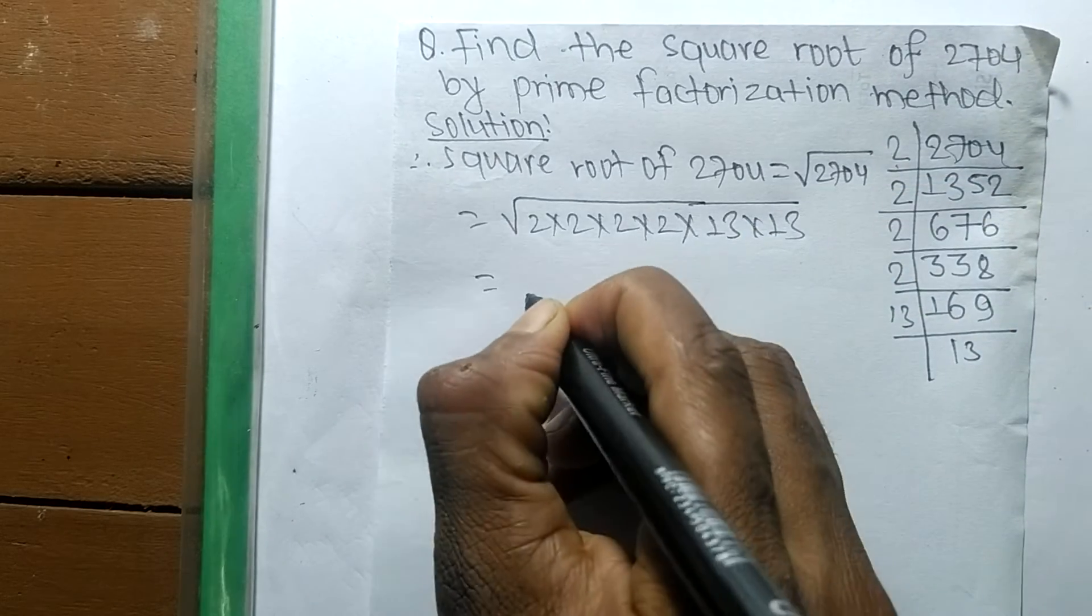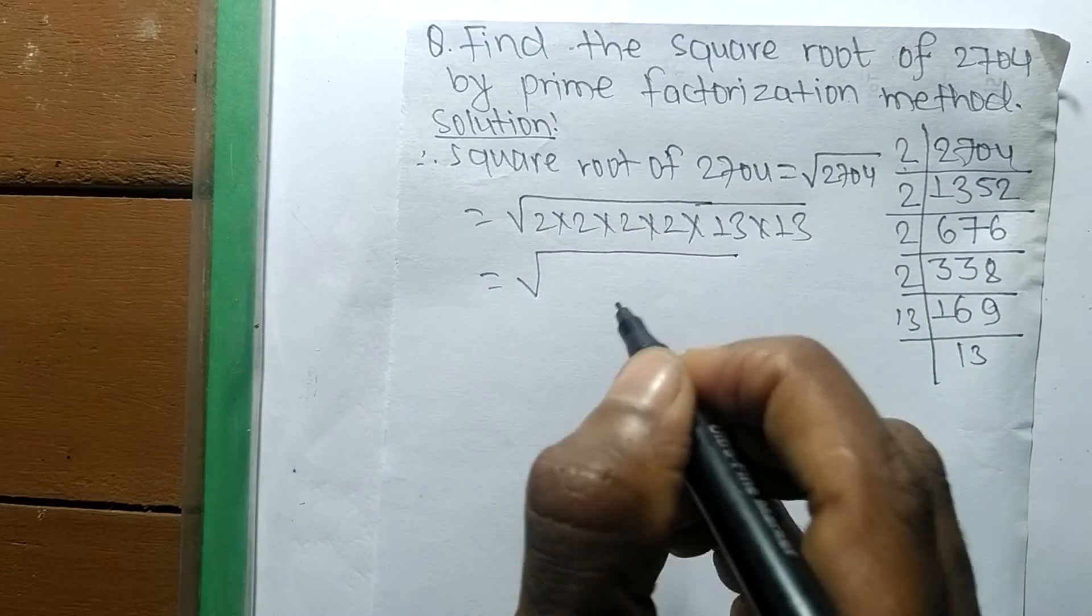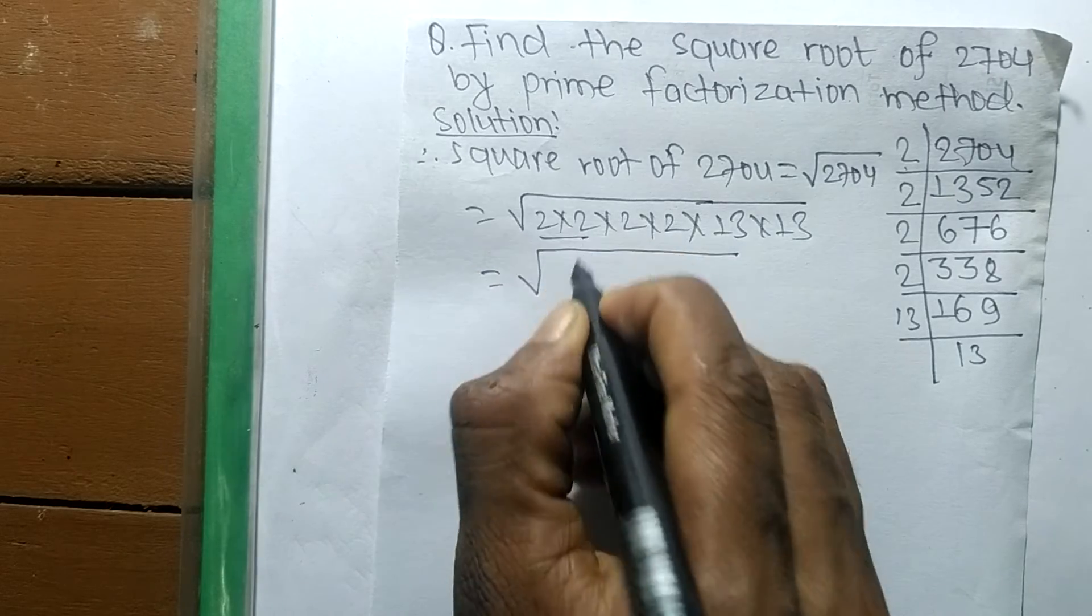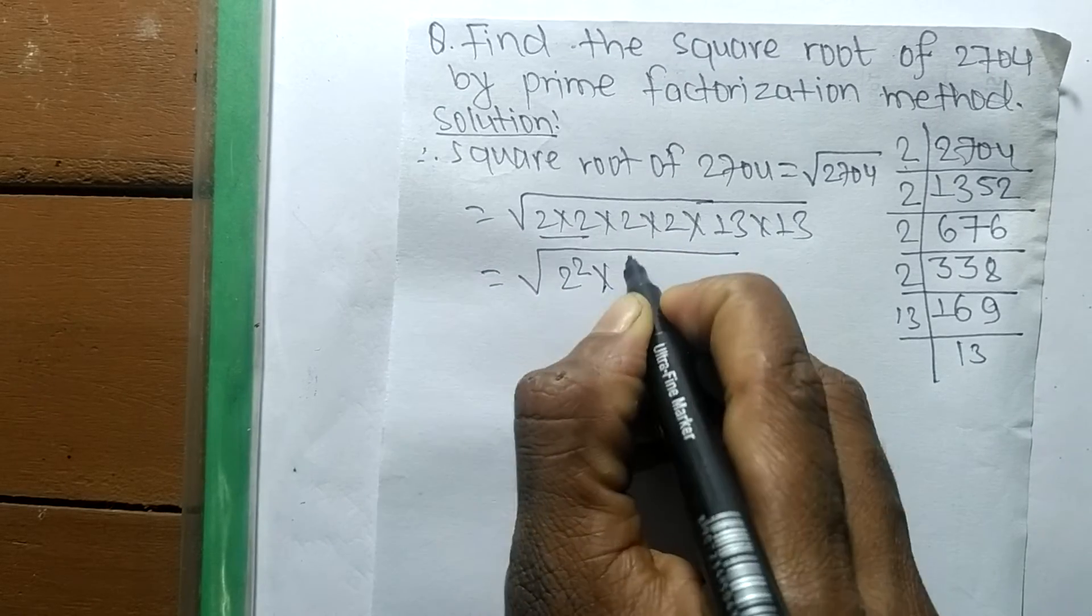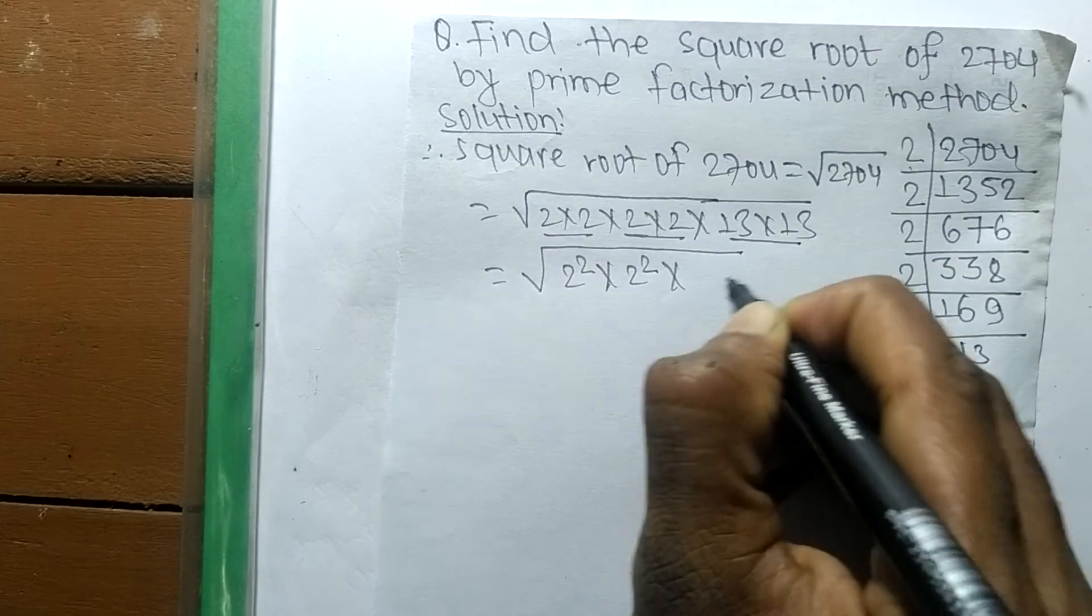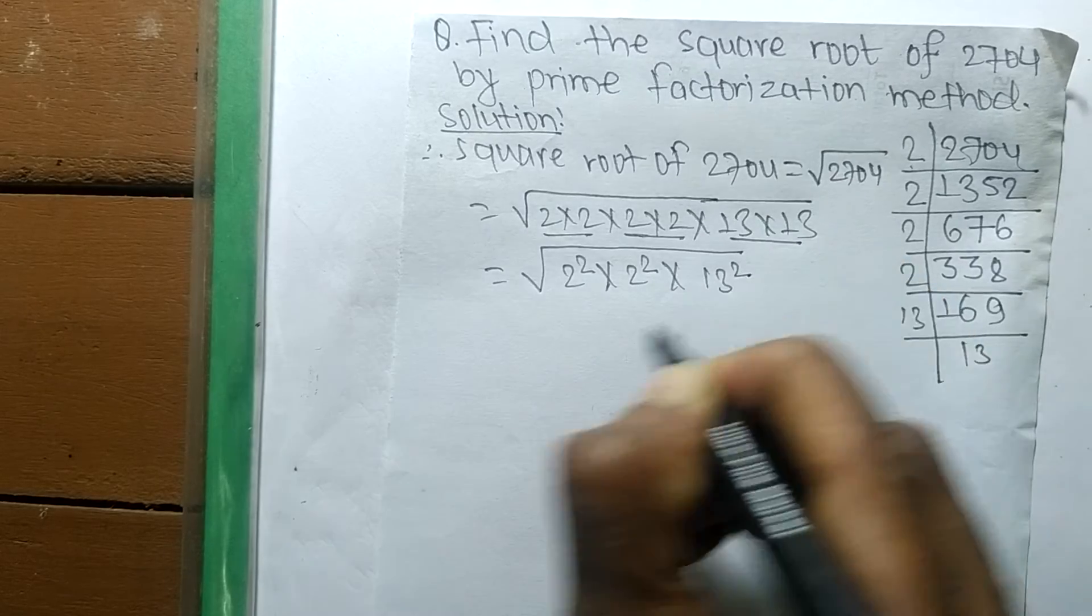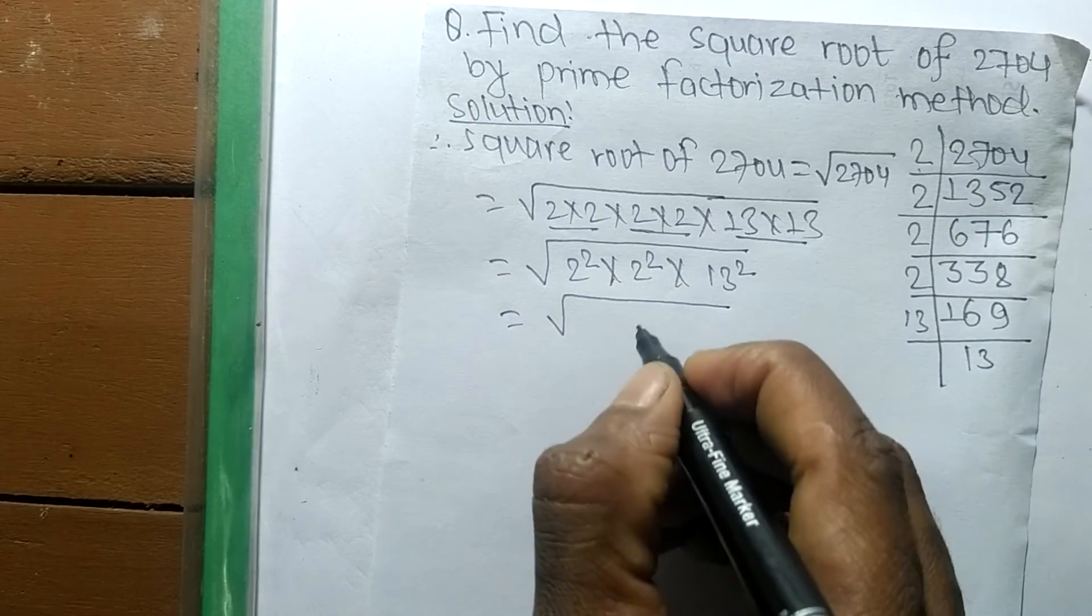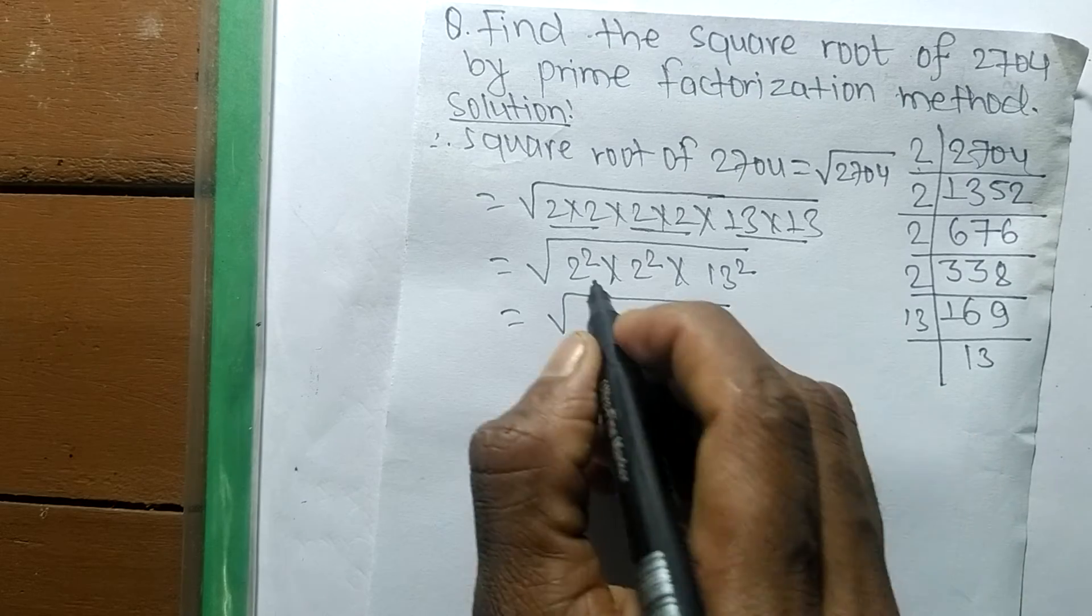After writing all the prime factors, we make squares from these prime factors. 2 times 2 is 2 squared, another 2 times 2 is another 2 squared, and another 2 times 2 is another 2 squared. 13 times 13 is 13 squared. After making squares, we can write this as 2 times 2 times 2 times 13, whole squared.